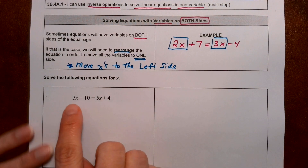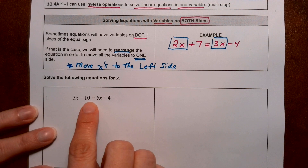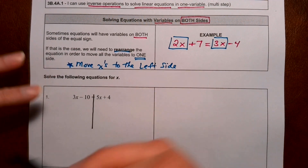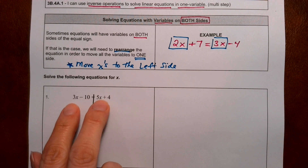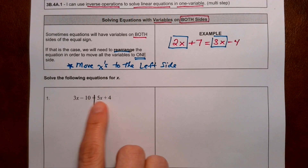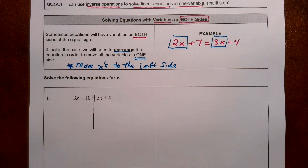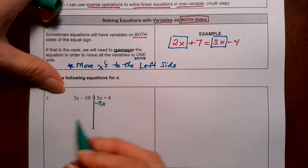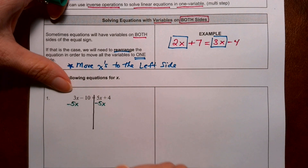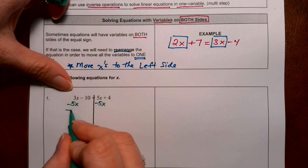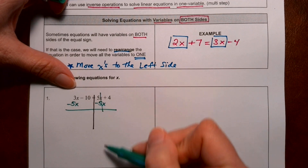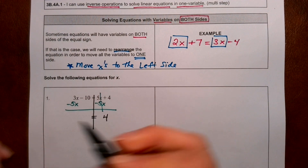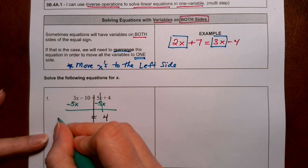Let's take a look at example number one: 3x minus 10 is equal to 5x plus 4. If you like to draw the wall, it goes down the equal sign like it always was, but there are variables on both sides. I am going to rearrange — I'm going to eliminate the x's on the right. Since this is positive 5x, I'm going to subtract 5x from the right and from the left. 3x minus 5x makes negative 2x.